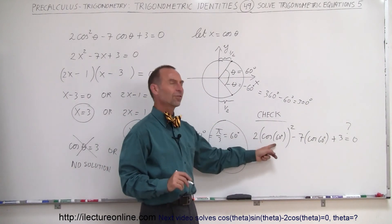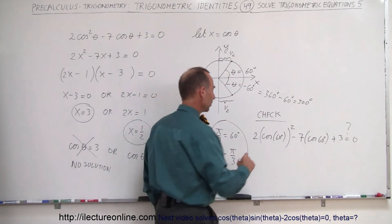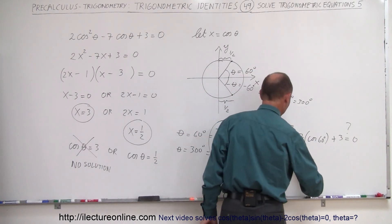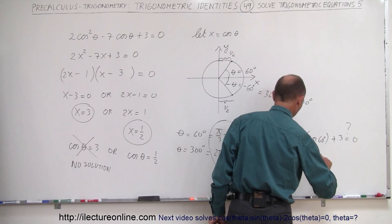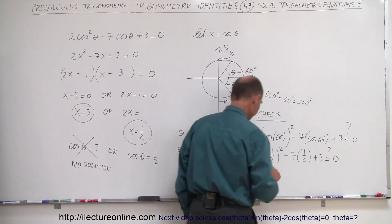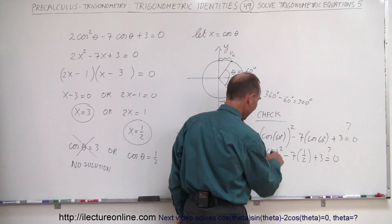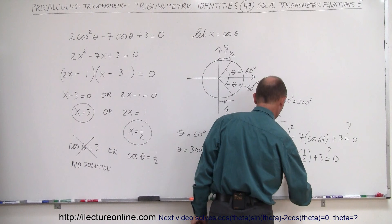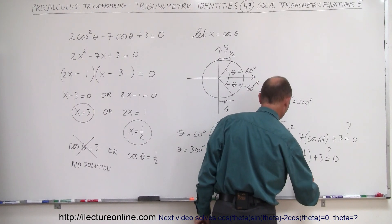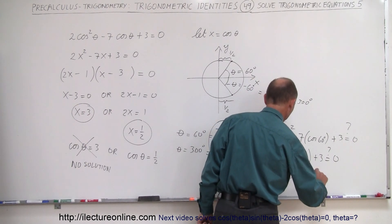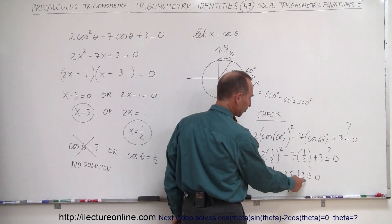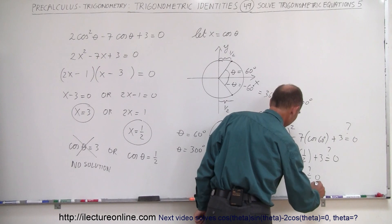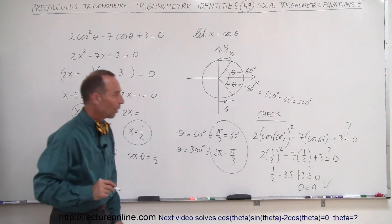What is the cosine of 60 degrees? Well, that's equal to 1 half, so this becomes 2 times 1 half squared, minus 7 times 1 half, plus 3. Is that indeed equal to 0? So 1 half squared is 1 quarter, times 2 is 1 half, so 1 half minus 3.5, plus 3. Is that indeed equal to 0? And sure enough, because minus 3 and a half plus 3 is minus 1 half, plus 1 half, yes, 0 equals 0.